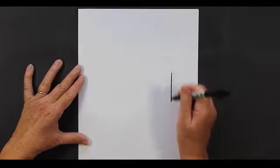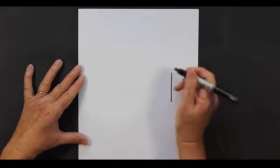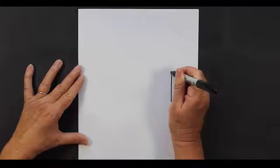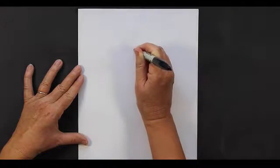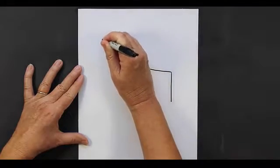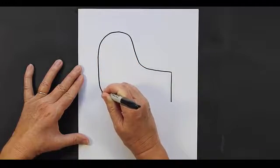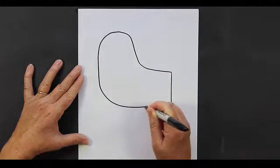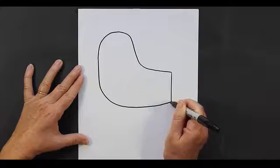That's going to be the back side of the bird. Now we're going to come straight out, go up, come around in a rounded shape, and then close up at the line.